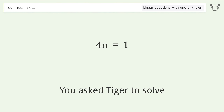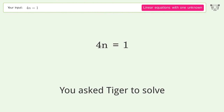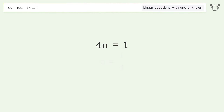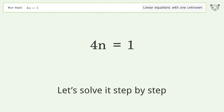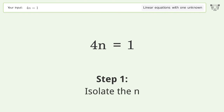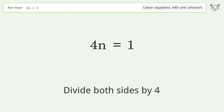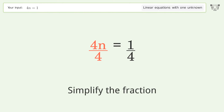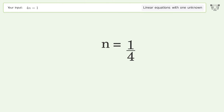You asked Tiger to solve this — it deals with linear equations with one unknown. The final result is n equals 1 over 4. Let's solve it step by step: isolate the n, divide both sides by 4, simplify the fraction. And so the final result is n equals 1 over 4.